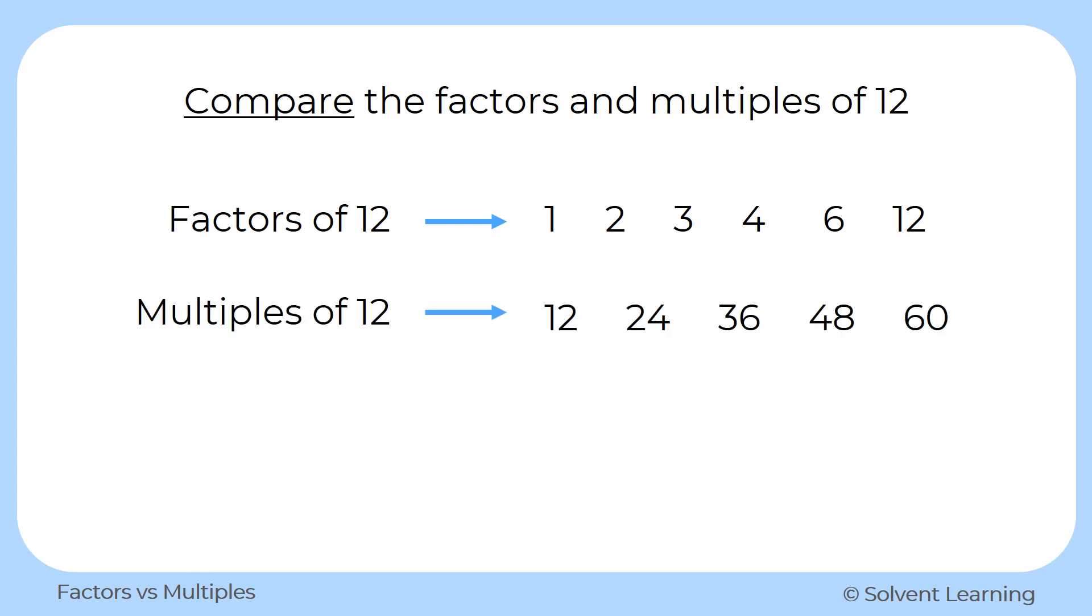Now we can list the multiples of 12. The multiples we can find by starting with the number, in this case 12, and then keep adding that number in. So we just keep adding 12 to the previous number and that'll list the multiples.